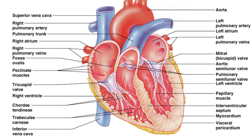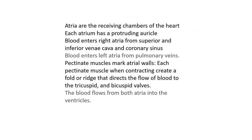Let's look at the general anatomy of the heart. We're looking at the inside of the heart — here's the atrium, and here are the ventricles, separated by connective tissue and valves. The atria are the receiving chambers of the heart. Each atrium has a protruding auricle — it's like an ear on top of the atrium — and that auricle is used as a reservoir.